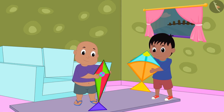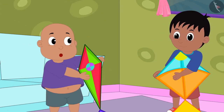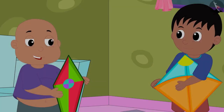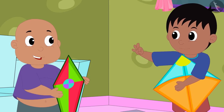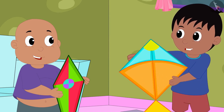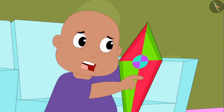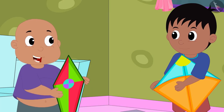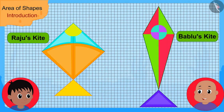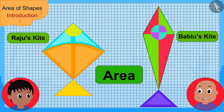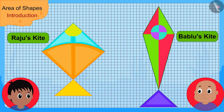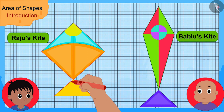Raju and Bablu have made kites. Bablu told Raju, showing his kite, 'Look how beautiful my kite is.' Raju replied, 'Yes Bablu, your kite is really beautiful, but my kite is bigger than your kite.' Bablu said, 'No, my kite is bigger than your kite and more beautiful as well. Let us draw outlines of both kites on a grid paper and find their areas. One whose kite has a larger area will have the larger kite.' And then he drew outlines of the kites on a grid paper.